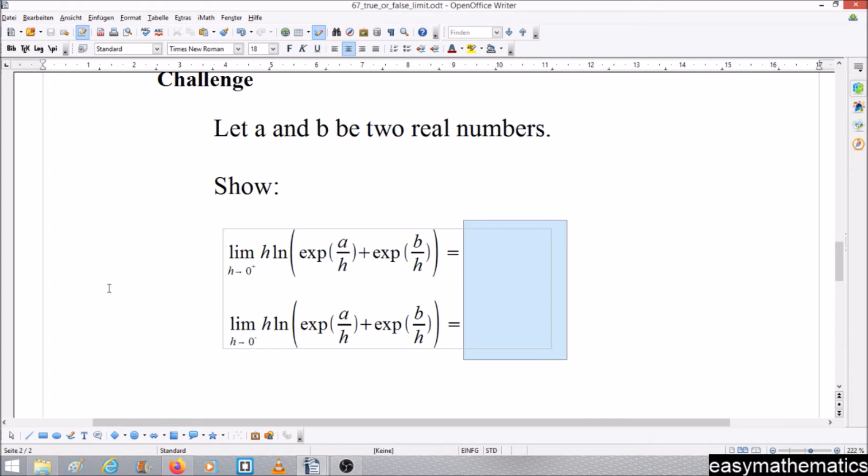h times natural log of exponential a over h plus exponential b over h. And we consider the right sided limit and the left sided limit.